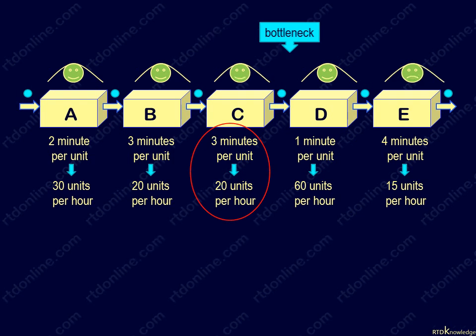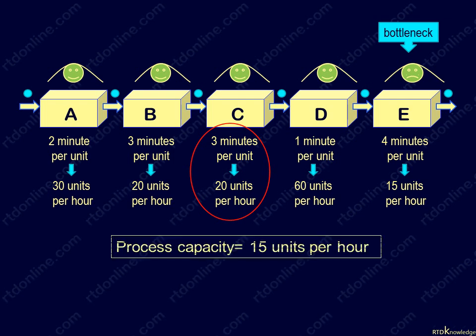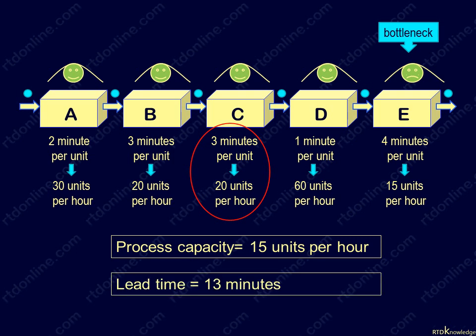Since the bottleneck now shifts to station E, our capacity increases to 15. Consequently, we've also cut the lead time from 15 to 13 minutes. The principle is that reducing the bottleneck cycle time always increases the capacity of the entire process and reduces lead time.